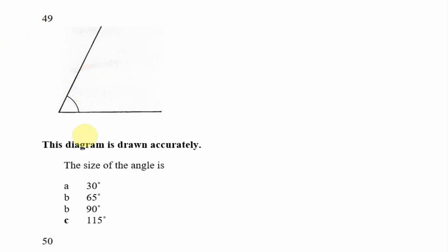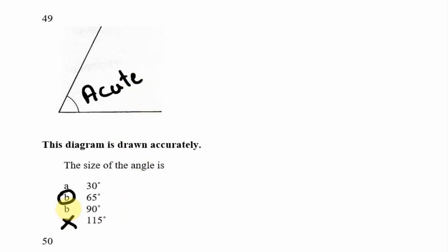Looking at question 49: this diagram is drawn accurately. What is the size of the angle? You are allowed to use a protractor to measure the angle. From experience, this angle looks to be about 65 degrees. It is an acute angle — greater than zero but less than 90 degrees — so it wouldn't be 115 degrees (obtuse) or 90 degrees. It is also larger than 30 degrees. The answer is 65 degrees, and with a protractor you can confirm the exact size.